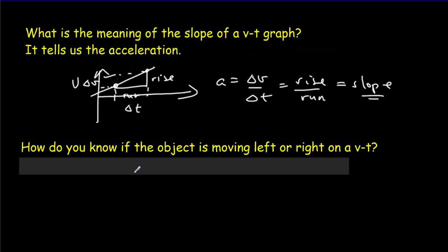Second question, how do you know if the object is moving to the left or the right on a VT graph? Be a bit careful with that question. Remember, you've got positive velocities all up here, and you've got negative velocities down here. So, if we've got a point down here, any point below the time axis, that's going to be moving left. Any point above the time axis is going to be moving to the right.